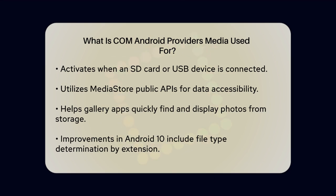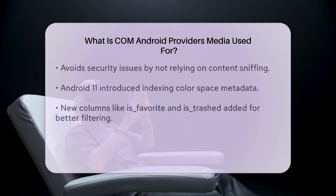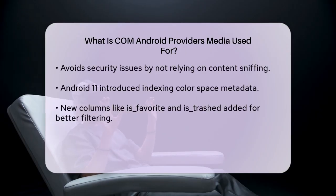In Android 10, several improvements were made to how the Media Provider Module works. It can now determine the content type of a file using just the file extension, without relying on content sniffing, which helps avoid security issues. It also uses a combination of Debian Linux and Android mappings to identify the MIME type of arbitrary files.